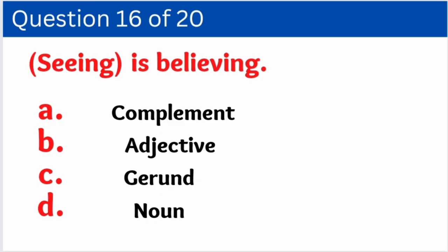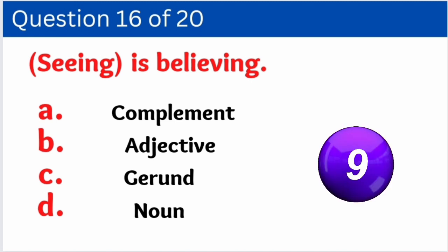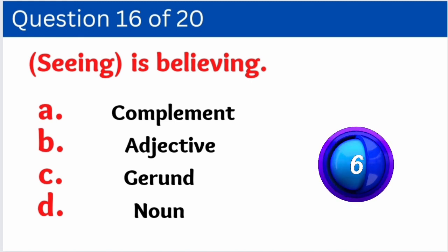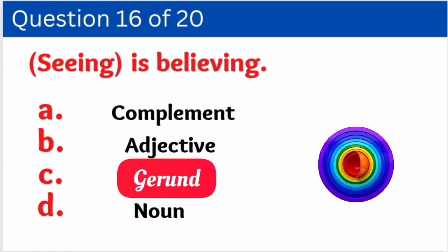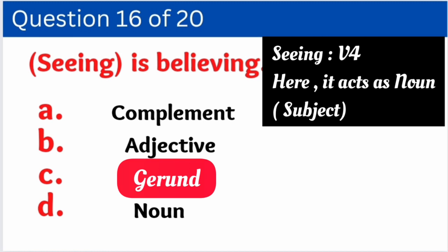Question number sixteen: 'Saying is believing.' Options are: A. Complement, B. Adjective, C. Gerund, D. Noun. The right answer is — 'saying' is used here as option C, that is Gerund. Gerund means the -ing form of a verb, the fourth form of verb, when it functions as a noun.